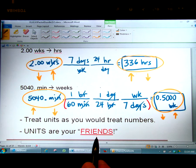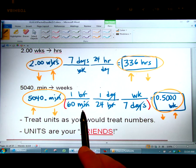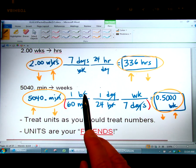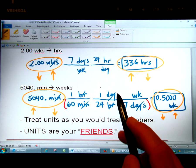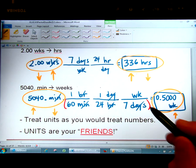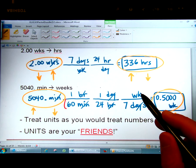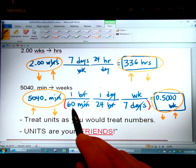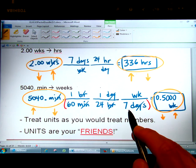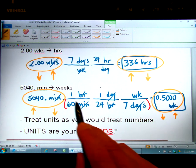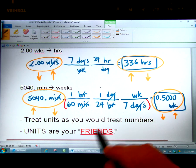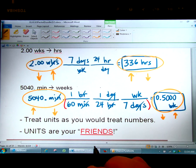Because units tell you how to do the problem. The units told you that you need to put minutes on the bottom and hours on the top. And then the units told you to put hours on the bottom and days on the top. And then the units told you to put days on the bottom and weeks on the top. And they also told you where to put the 60, 24, and 7 because you understood that 60 minutes is equal to 1 hour, etc. So the units are your friends in these problems.